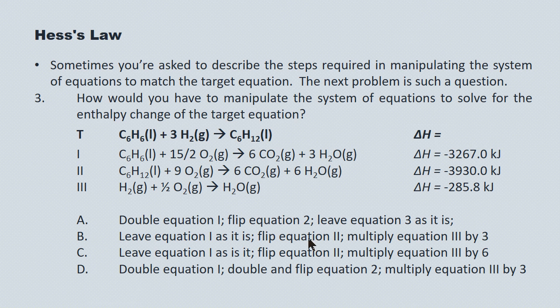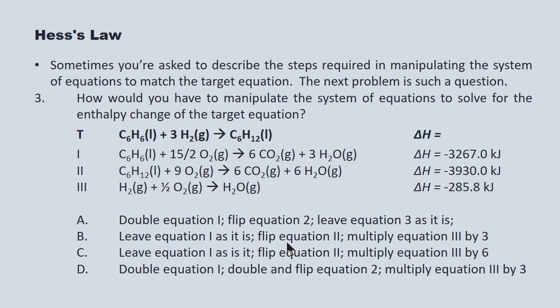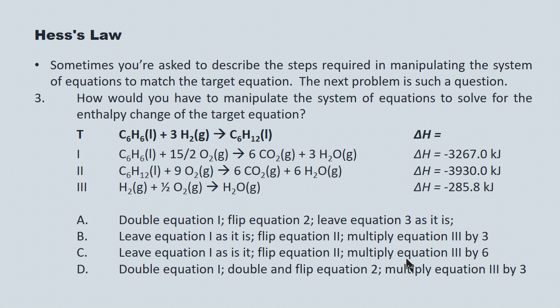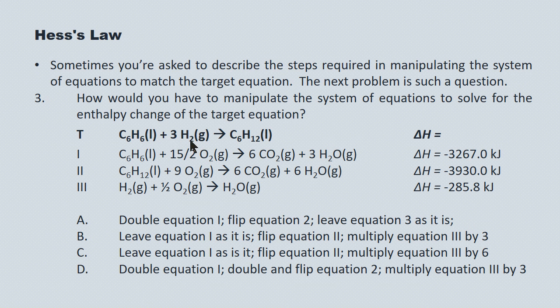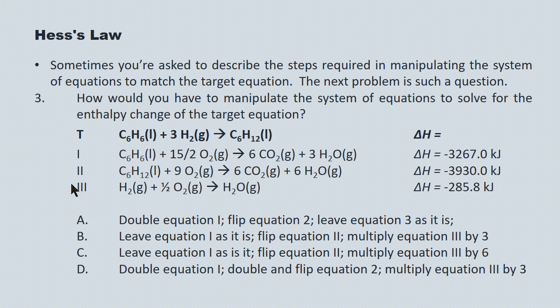Choices B and C are left, and you'll notice that choice B and C both do the same thing with equation 2. They both ask you to flip equation 2. So there's really no choice there. What we have to look at is equation 3. Do we want to multiply equation 3 by 3 or multiply equation 3 by 6? So here's equation 3, and you'll notice that it's the only supplier for the hydrogen, the H2. In the target, 3 moles of hydrogen are consumed, and in equation 3, 1 mole of hydrogen is consumed. So clearly equation 3 has to be multiplied by 3. And that makes choice B the correct answer.